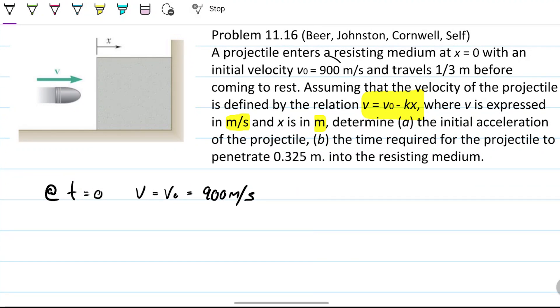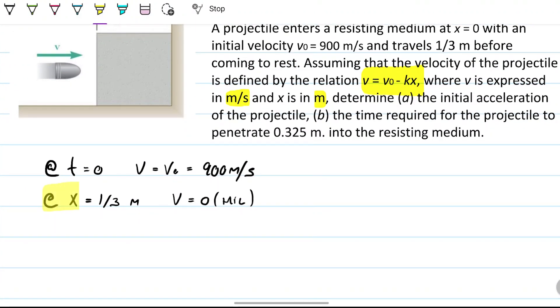The other one is the relationship between the velocity and the x. Because we know that when x is a third of a meter, then the velocity is zero because it comes to rest. So at x equals 1/3 meter, the velocity equals zero. That comes from this information here that it travels one third before coming to rest. So these are boundary conditions and can be used to help us out in solving this problem.